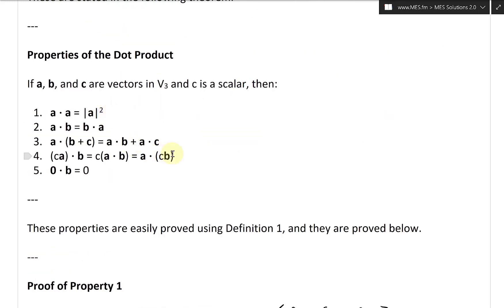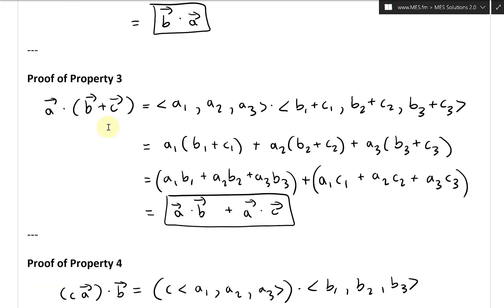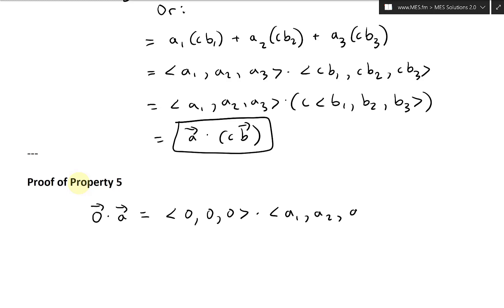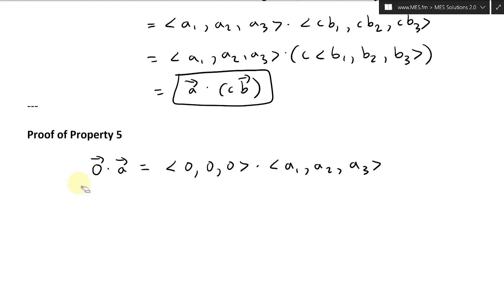Now let's look at Property 5: the zero vector dot B equals zero. Proof of Property 5: the zero vector dot any vector — the components of the zero vector are 0, 0, 0 dot A1, A2, A3. By definition: 0 times A1 plus 0 times A2 plus 0 times A3 equals zero. So a zero vector dotted with any vector is just zero.